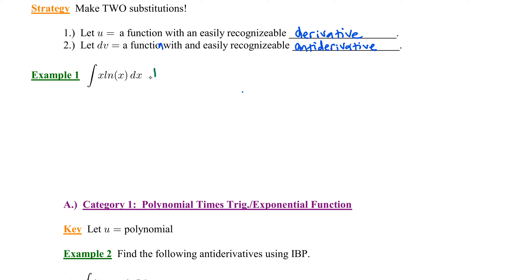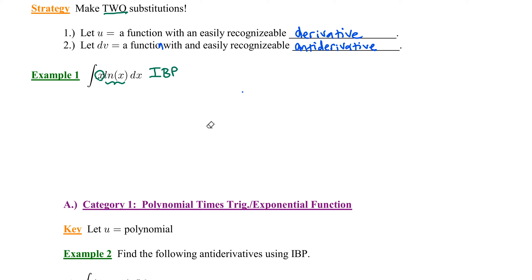In integration by parts, abbreviated IBP, we're going to make two substitutions. We choose u to be a function with an easily recognizable derivative. Both x and natural log of x are easy to differentiate, so they're equal candidates at first. But we also need dv to be a function with an easily recognizable antiderivative. We know how to integrate x, but we do not yet have a formula to integrate natural log of x.